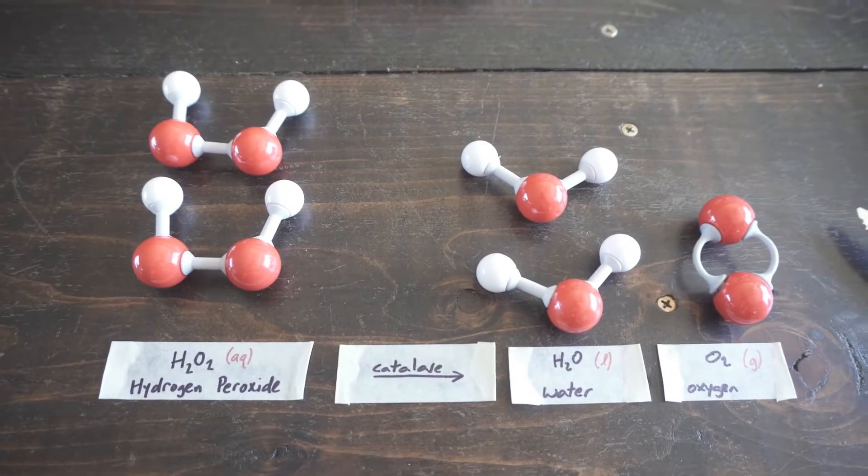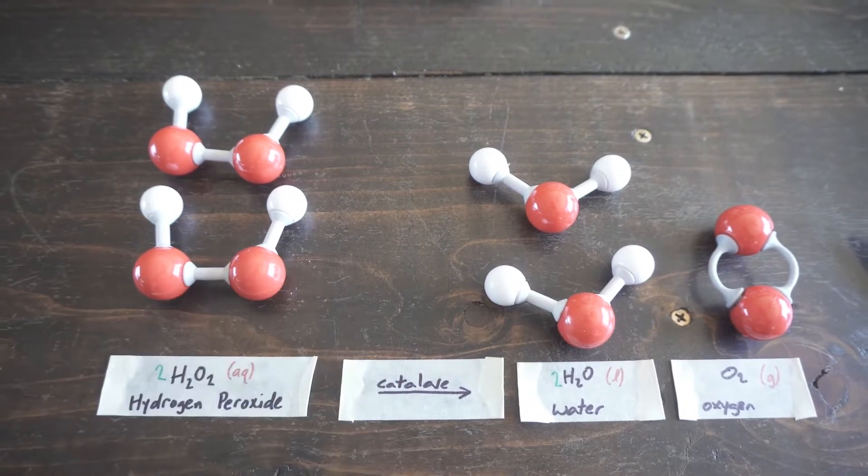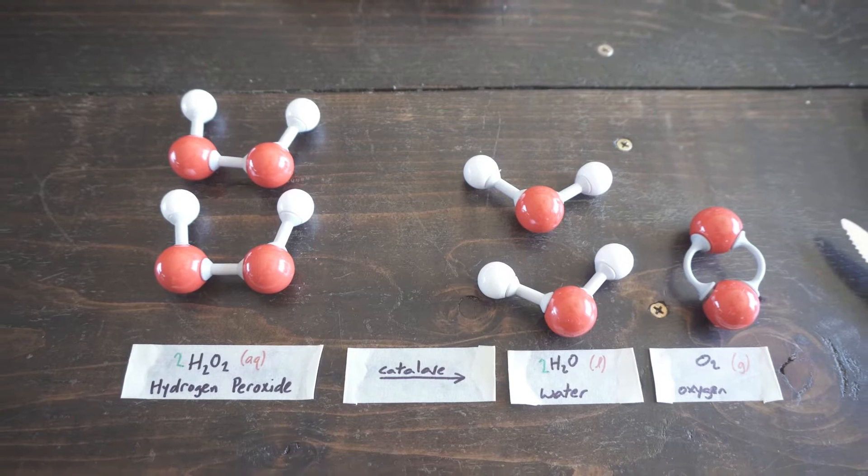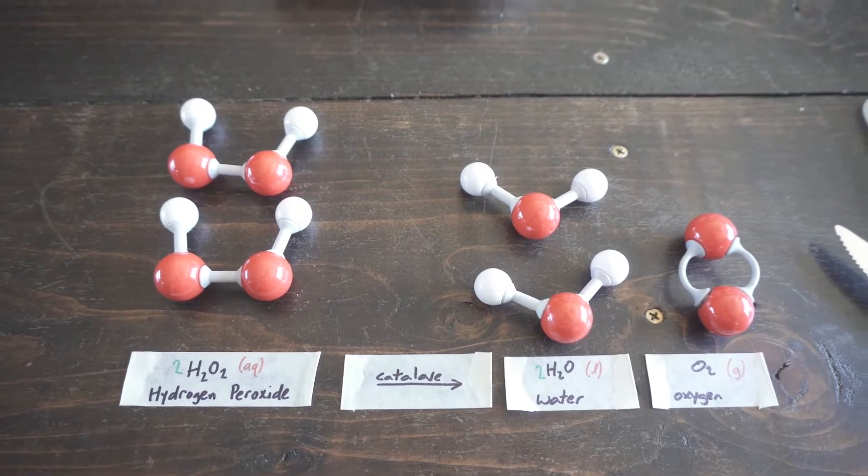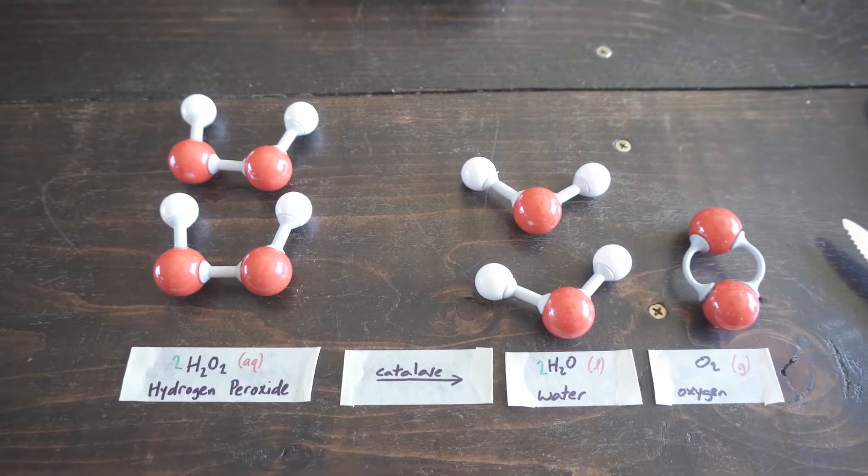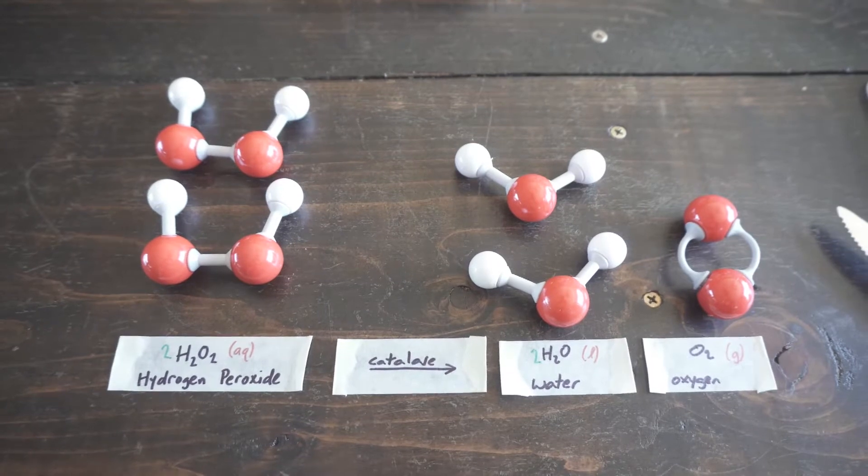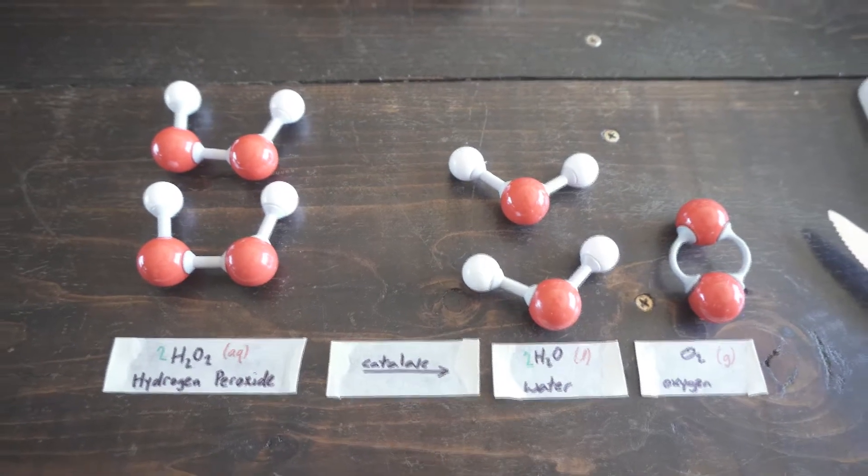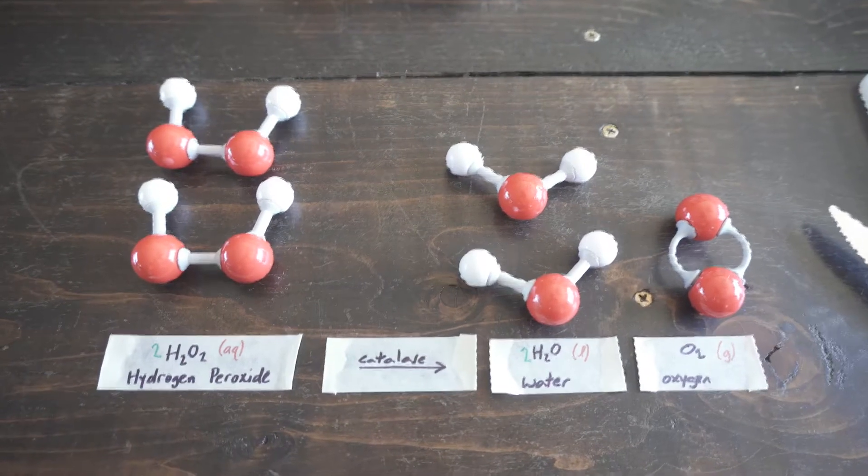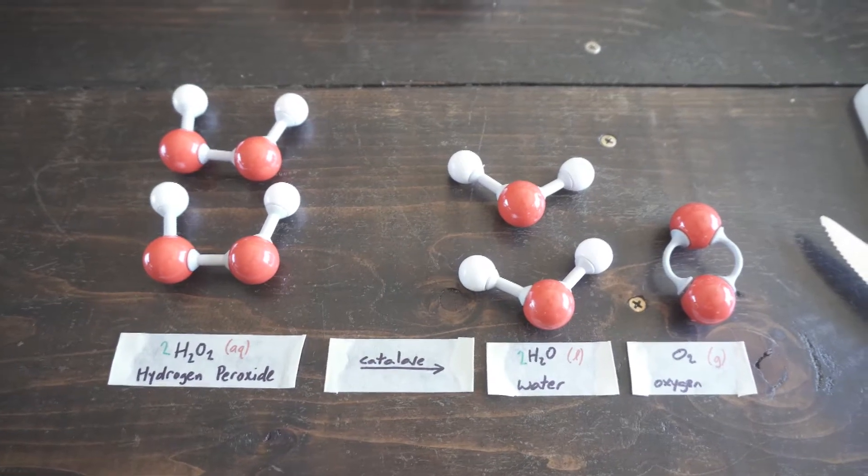So in order to balance that out we will need to add another water molecule into this side of the reaction and so then we can write the coefficients. So two hydrogen peroxide molecules react with catalase to produce two water molecules plus an oxygen molecule, and in chemistry we're actually learning that the even more accurate way to put this would be two moles of hydrogen peroxide molecules will react with the enzyme catalase to produce two moles of water plus one mole of oxygen gas.